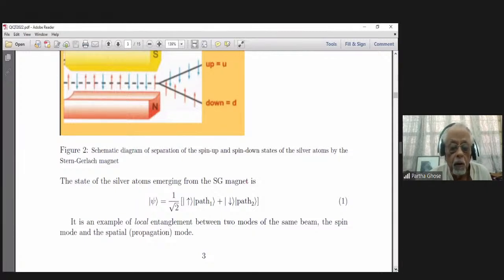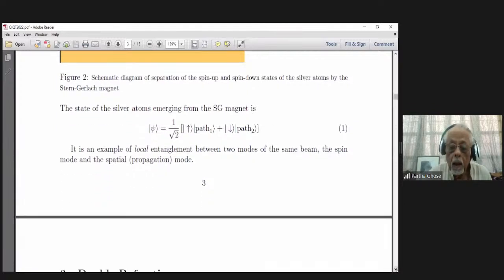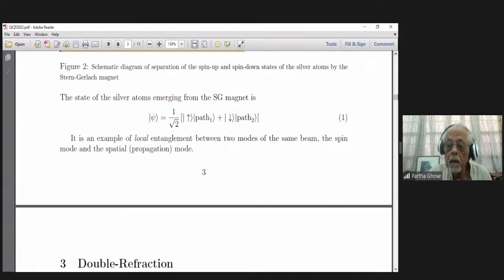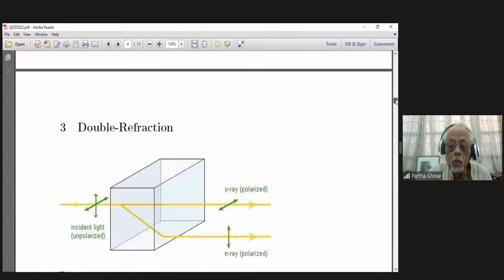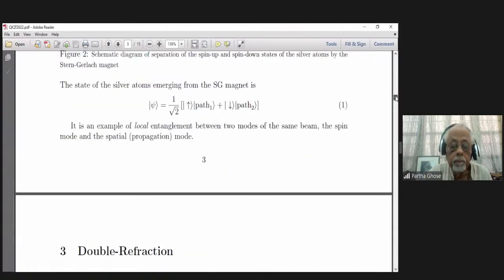1 by root 2, spin up in path 1 plus spin down in path 2. Now, it is an example of local entanglement between two modes of the same beam—two modes of the same beam.